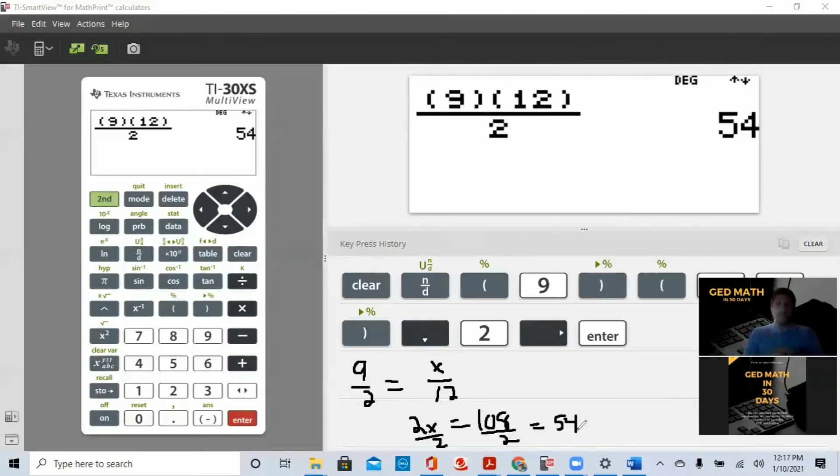So again, cross-multiplication would be 2x equal 108, divide both sides by 2, and we get 54. Again, this is a nice, easy way. So let me summarize solving proportions for the GED math exam. The simplest way is try to use equivalent fractions to find your answer. The second way is to try to use unit rate to find your answer. And the third way is to use cross-multiplication. I can guarantee you, you're going to have three to four problems just on proportions.